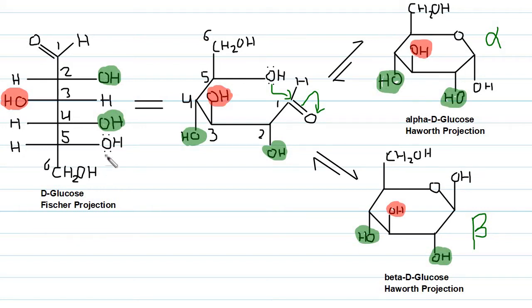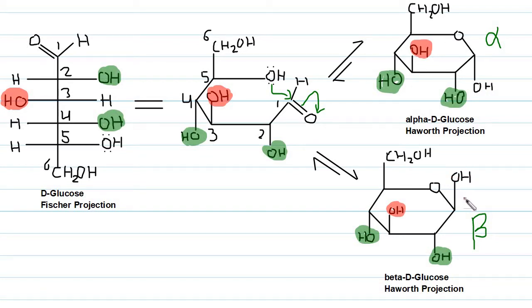This is the Fischer projection — the non-cyclic structure — in which the OH groups present on the right-hand side, shaded in green, are present on the down side in the Haworth projection. The hydroxy group on the left-hand side in the Fischer projection is present up in the Haworth projection. This carbon is the newly formed stereocenter which has a hydroxy group either on the down side or on the up side. When the OH group is present on the down side, this form is known as the alpha form, and when the OH group is present on the up side, it is known as the beta form. This is the alpha anomer, this is the beta anomer, and this is the anomeric carbon — the newly formed stereocenter in the Haworth projection.